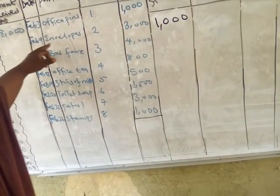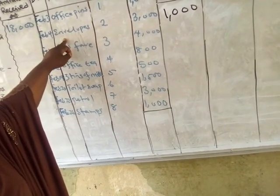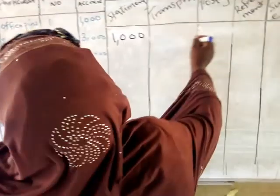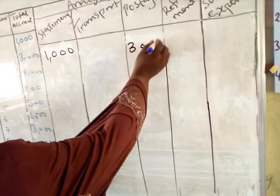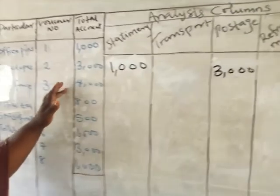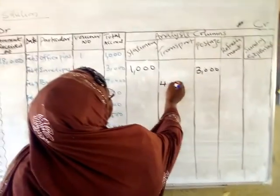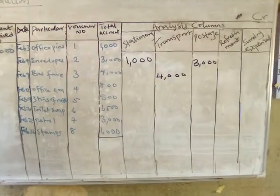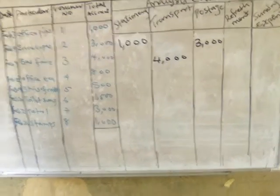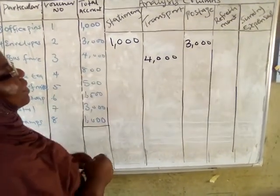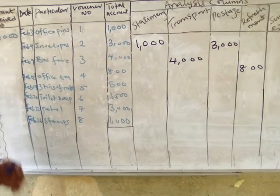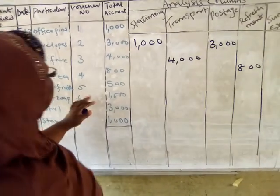The next item — postage paid on February 4th — the amount is $4,000 and this falls under transport. The next one is office tea. This falls under refreshment. Then we have three tins of meat — because you need meat to prepare tea, this also falls under refreshment, amount $500.